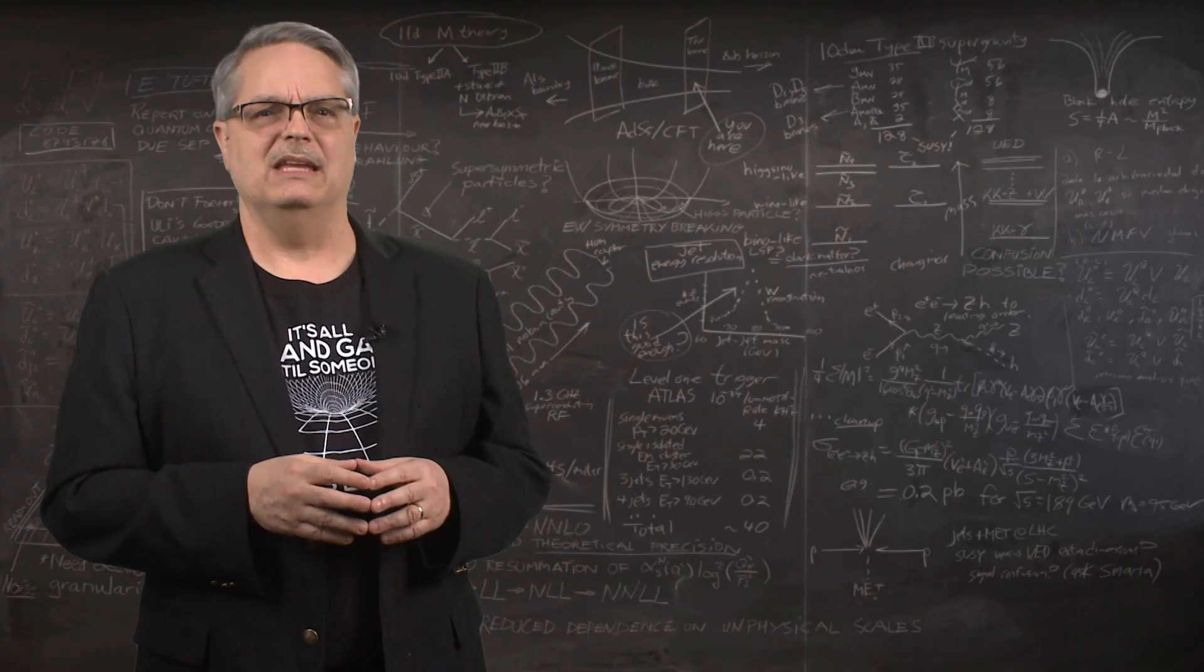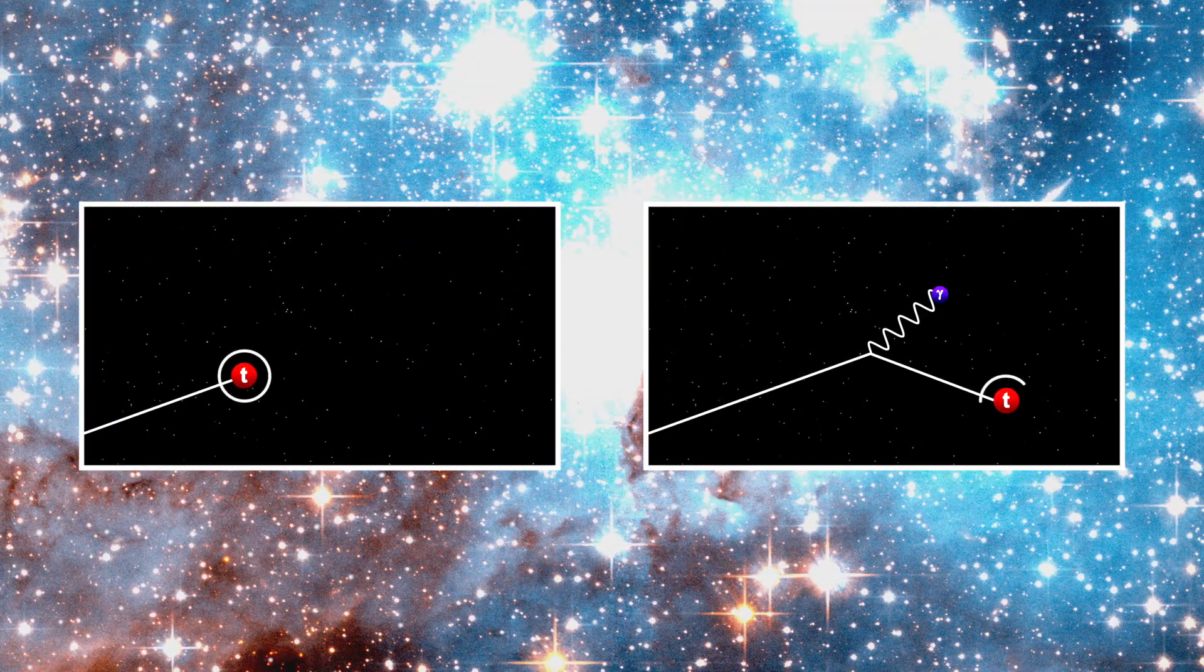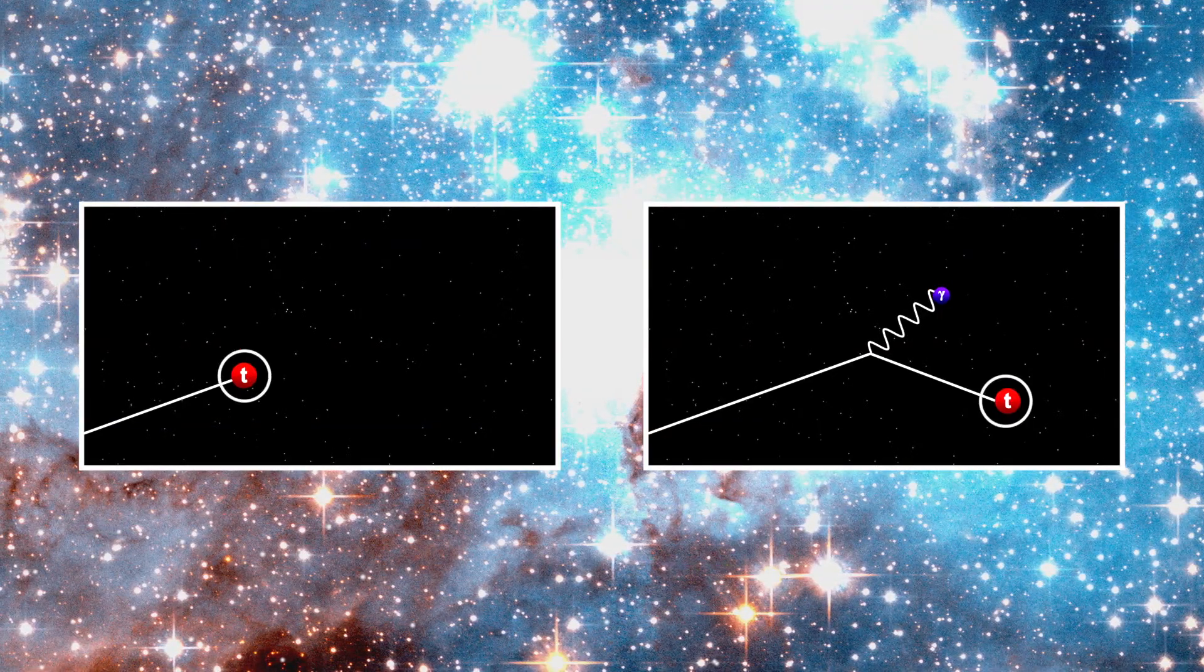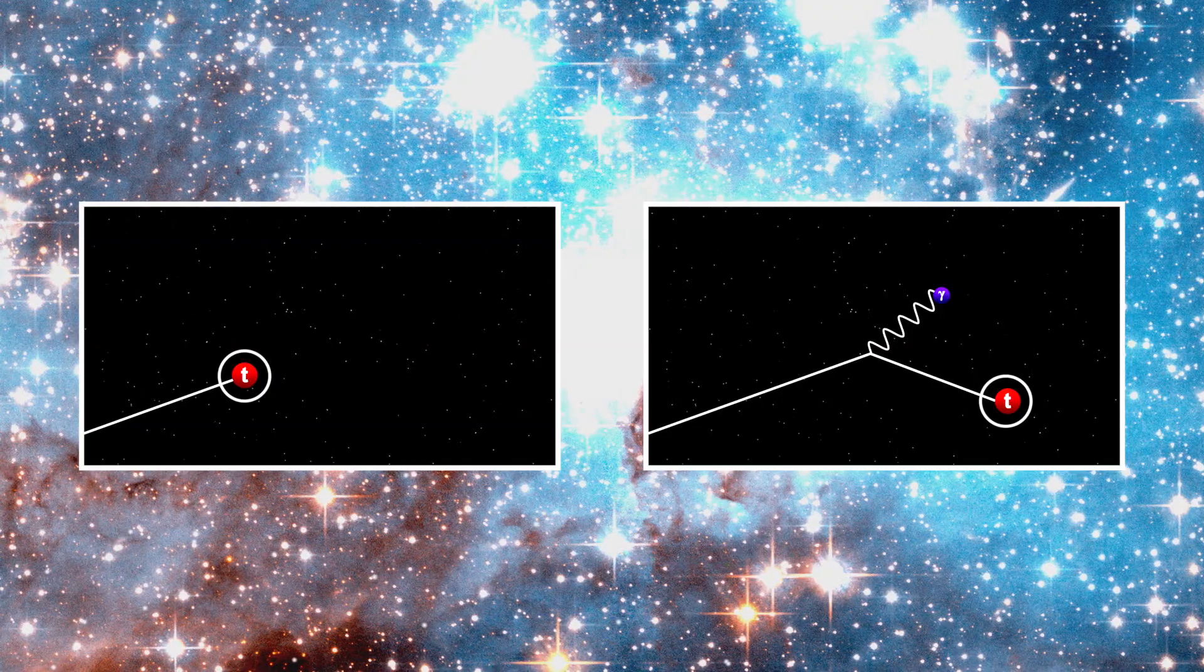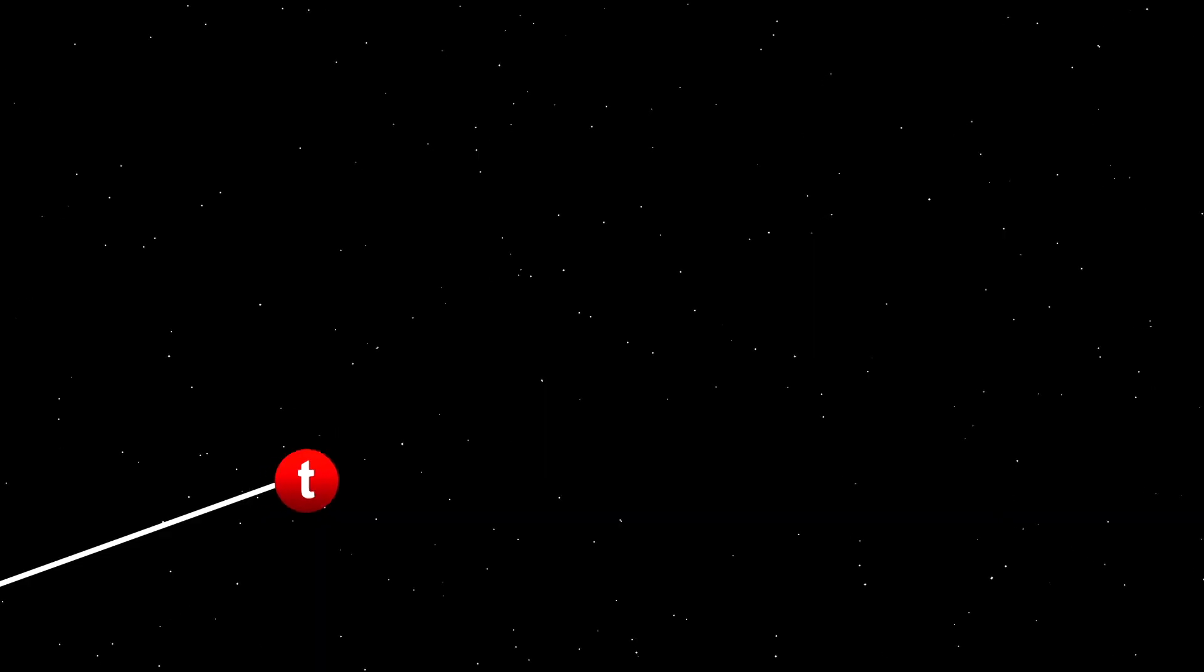Now, getting back to the decay. I want to redirect your attention to the fact that before and after the electromagnetic interaction, the particle is the same. Let's look at what happens during a strong force interaction. The same top quark might emit a gluon and would continue on as a top quark.